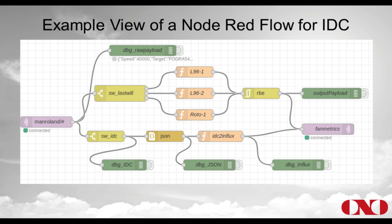The Node-RED flow design looks like this — an example of how we get IDC data into InfluxDB. On the left side is our MQTT consumer. We get raw data as a JSON object from the MQTT broker. We have JavaScript functions: first we convert from JSON to an object, then a JavaScript function transforms it into the standard we defined for InfluxDB. Finally we publish it again on another MQTT topic where InfluxDB consumes it from.